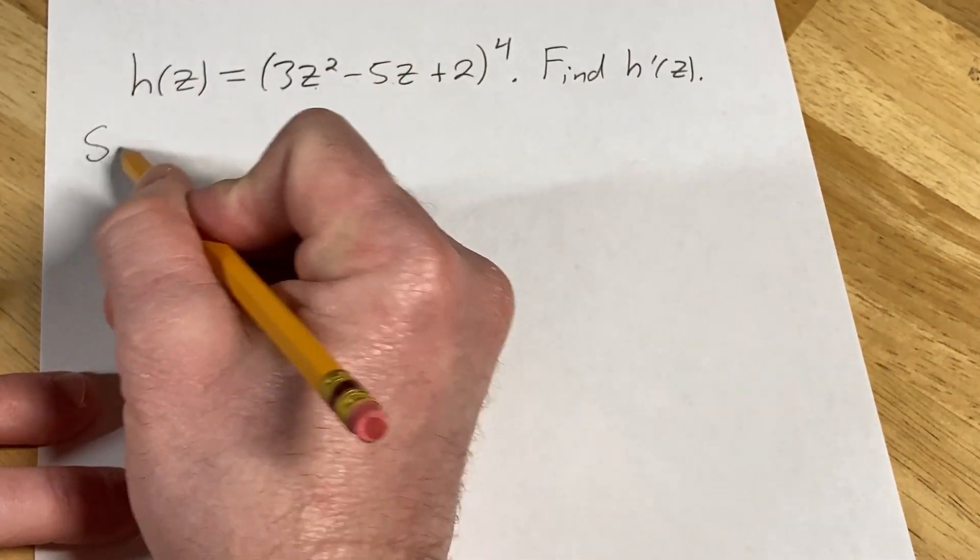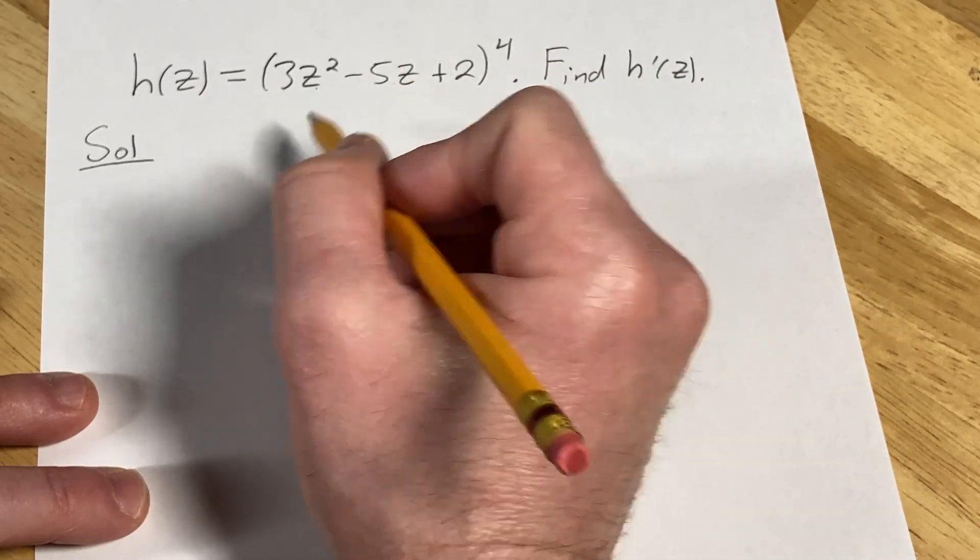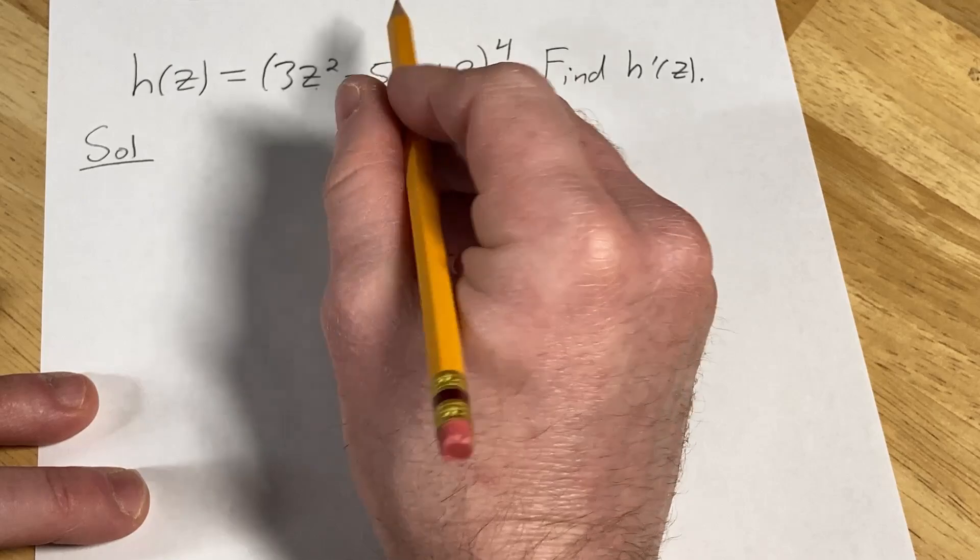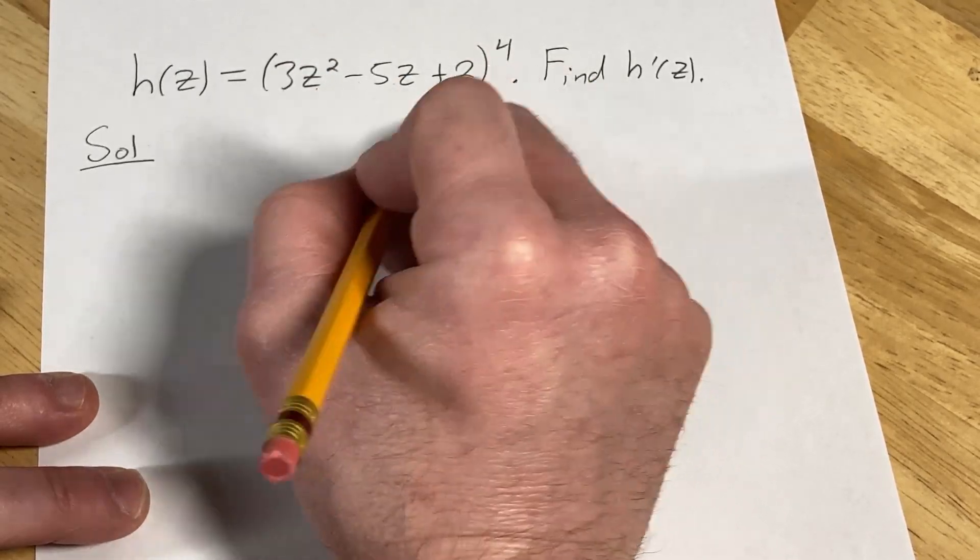Let's go ahead and go through it. Solution. To do this, we're going to use something called the chain rule. The chain rule says you take the derivative of the outside function, leave the inside untouched, and then multiply by the derivative of the inside.